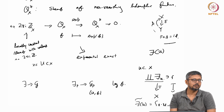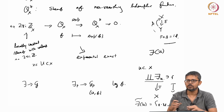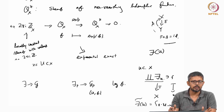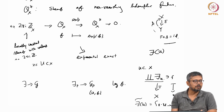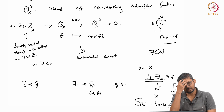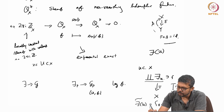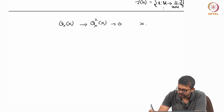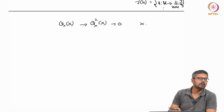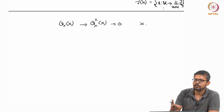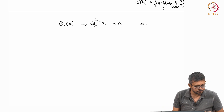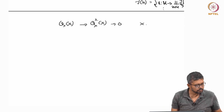One has to study the cohomology of sheaves, because if you have a short exact sequence, you get a long exact sequence. This happens everywhere — not just in algebraic geometry, but in algebraic topology also, in homology and cohomology. This is just an example showing that the global section functor is not exact. This exact sequence — the exponential exact sequence — has a name and is very important.